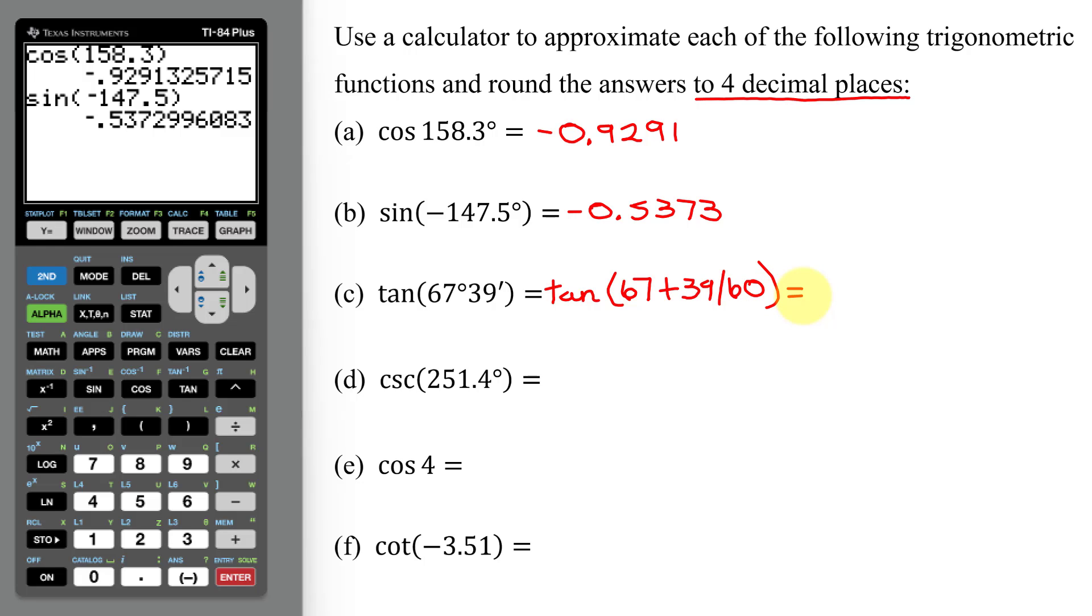So now I can do that in just one step on the calculator. Tangent of 67 plus 39 divided by 60, close parenthesis, and hit enter. And rounding, that's the position of this 2. The 0 is not going to affect it. So my answer is 2.4322.